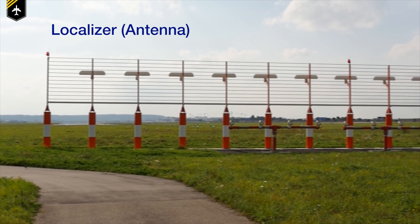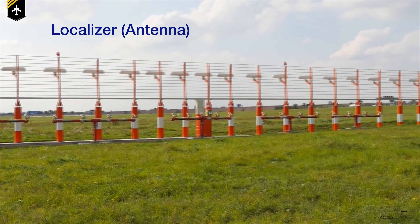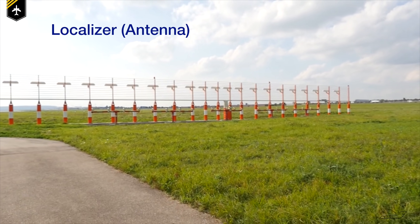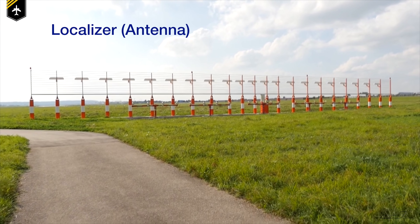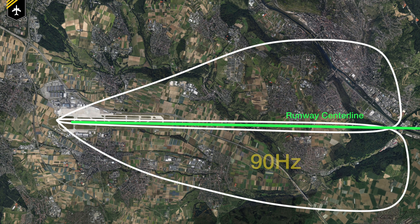Now let's talk more about the ground-based system. The system consists of two antennas sending out on one tunable frequency. The so-called localizer antenna is normally located beyond the end of the runway and is generally built up out of several pairs of directional antennas. They send out radio signals in the horizontal axis of the runway. The localizer antenna emits two lobes which are frequency modulated to 90 Hz on the left-hand side of the runway centerline and 150 Hz on the right-hand side.